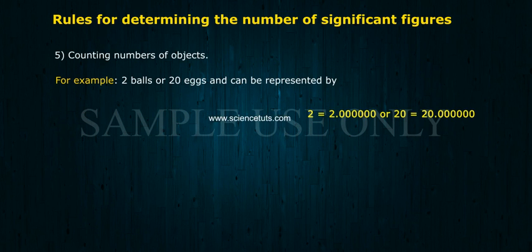Rule 5: Counting numbers of objects, for example, two balls or 20 eggs, can be represented by 2 = 2.000000 or 20 = 20.000000.